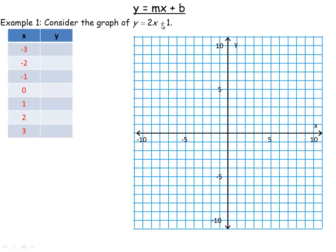We're going to go 2 times each x plus 1. For the first calculation, we put negative 3 in place of x: 2 times negative 3 plus 1. That's negative 6 plus 1, which equals negative 5. So the ordered pair negative 3, negative 5 is on the graph. Starting at the origin and going left 3, down 5 gives us that point. Next, putting negative 2 in place of x: 2 times negative 2 plus 1 is negative 4 plus 1, which equals negative 3. So negative 2, negative 3 is another point on the graph.